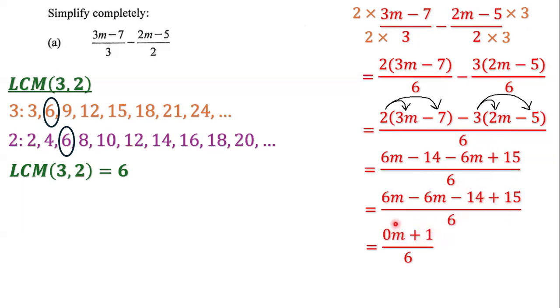We are left with 0 times m, which is simply 0. And 0 plus 1 is 1. So we have 1 over 6. The answer is 1/6, and we have simplified completely.